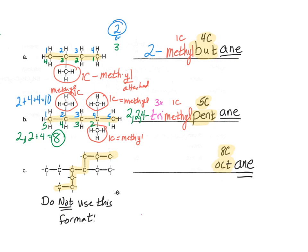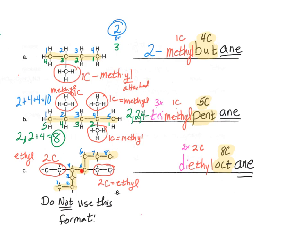We have two branches, each with two carbons. A two-carbon branch is called ethyl. We have two of them, so we write diethyl, giving us diethyloctane. Now we number it in the forward and reverse directions. In the forward direction, the first ethyl group is on carbon four and the second is on five. In the reverse direction, the first is on four and the second is on five. Since it doesn't matter which direction you pick, the answer is 4,5-diethyloctane.